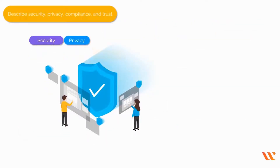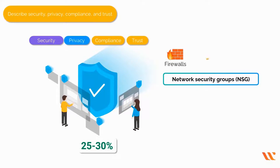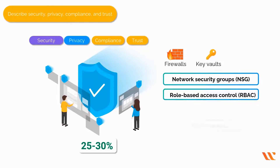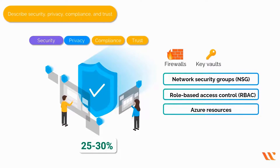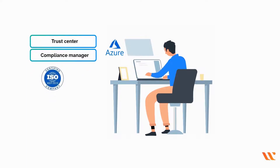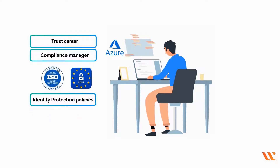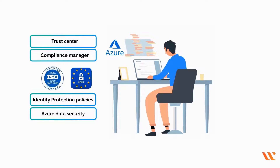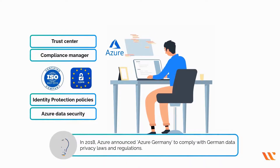Describe security, privacy, compliance and trust: 25 to 30%. Network security groups (NSG), firewalls and key vaults are all security building pieces in Azure. Role-based access control (RBAC), Azure Active Directory and multi-factor authentication (MFA) can all be used to manage access to Azure resources. You also learn about Azure Monitor, service health, trust center, compliance manager and terms like ISO, GDPR, identity protection policies, and Azure data security. Additionally, Azure Government is a physically separated Azure instance designed to meet compliance and security standards for US government workloads, and in 2018 Azure announced Azure Germany to comply with German data privacy laws and regulations.